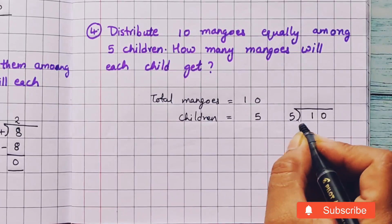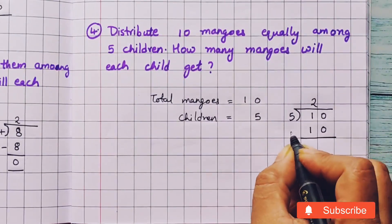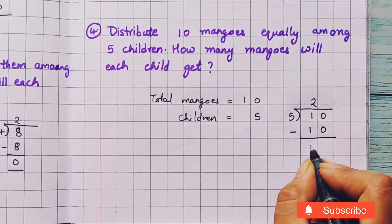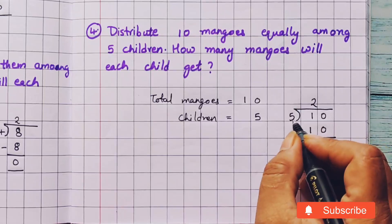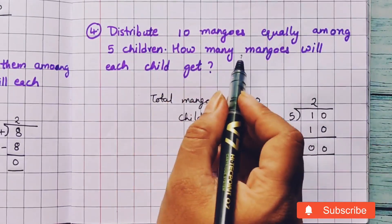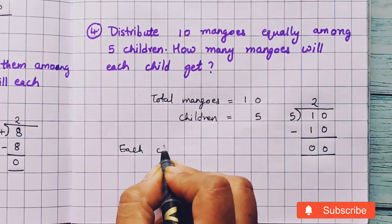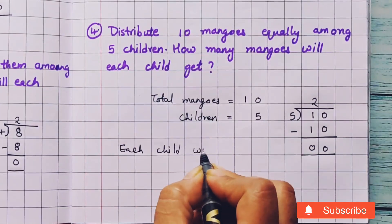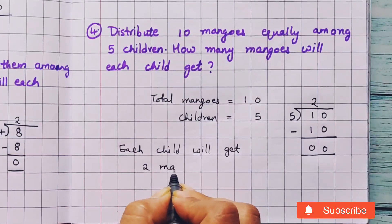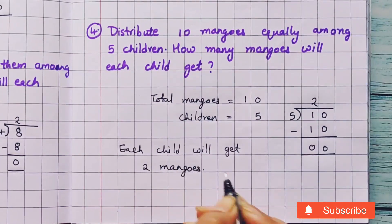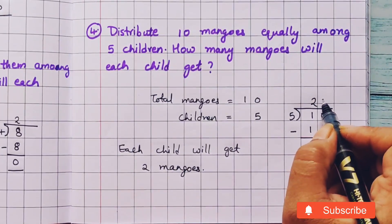5 ones are 5, 5 twos are 10. Let's do the subtraction: 10 minus 10 is 0. So the answer of 10 divided by 5 is 2. How many mangoes will each child get? Each child will get 2 mangoes. This is the answer, also known as the quotient.